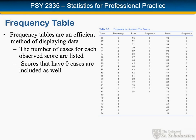A frequency table shows us a score and then the number of people who had that score. It's a way of collapsing a large data set into a smaller one. For something like this where scores ranged from 56 to 98, we didn't get all that much collapse because we have to have a row even when nobody actually got a particular score. As we'll see later, the grouped frequency table helps us in situations like this.